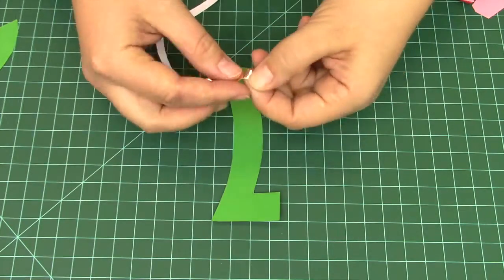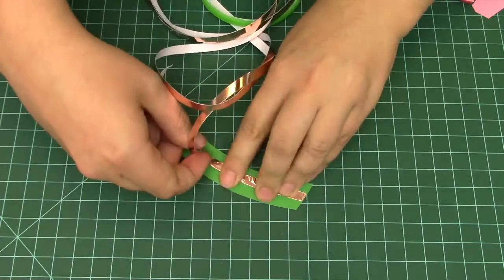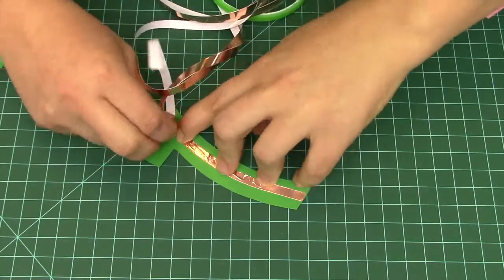Next we will add conductive tape to the stem. Run a strip directly down the center, until it almost reaches the bottom of the L.